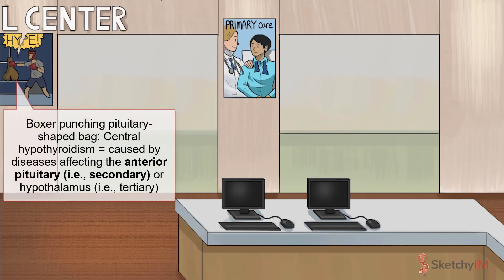Secondary hypothyroidism is caused by disease within the anterior pituitary, which is responsible for secreting thyroid stimulating hormone, aka TSH. To remind you that pituitary disease is the cause of secondary hypothyroidism, we've included our recurring Sketchy symbol for pituitary dysfunction — the pituitary punching bag here on this poster.